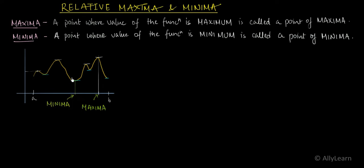This was easy because my function was defined in [a, b]. If I give you a function defined on the real number line, then finding maximum and minimum is a little difficult, and this concept becomes incomplete. So maxima and minima are divided into two types: relative maxima and relative minima, and absolute maxima and absolute minima.